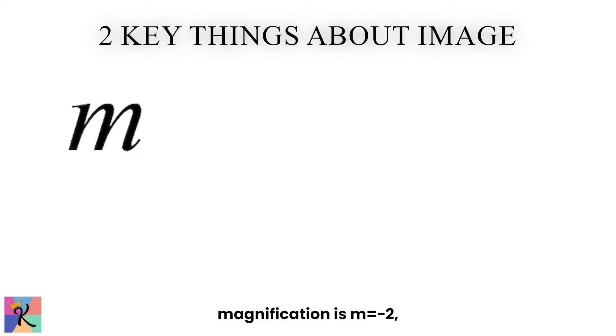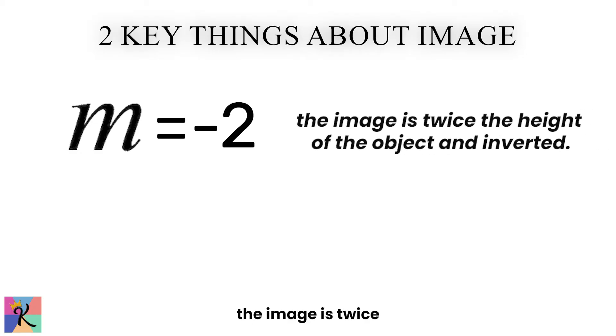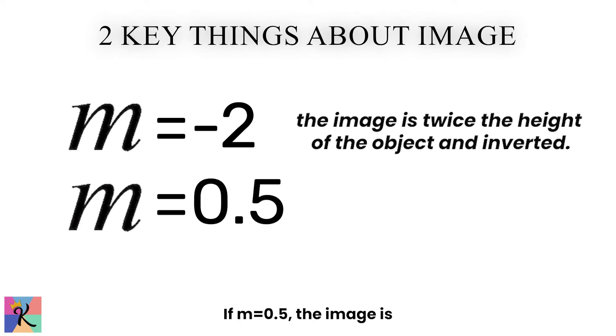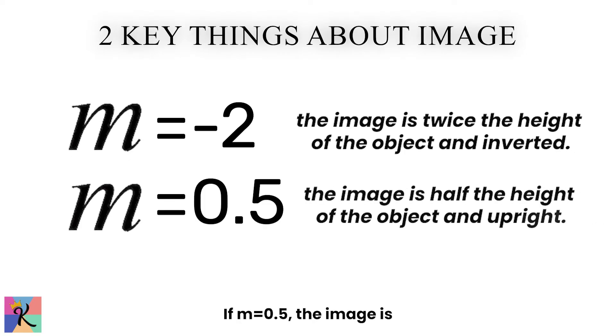For example, if the magnification is M equals negative 2, the image is twice the height of the object and inverted. If M equals 0.5, the image is half the height of the object and upright.